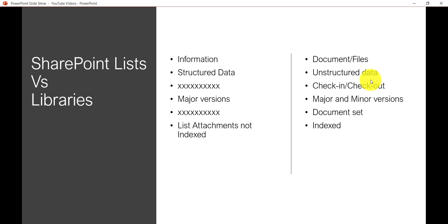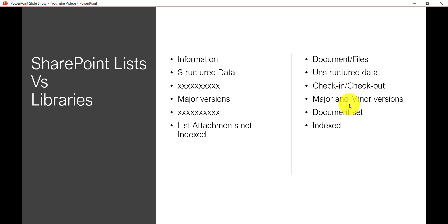In a library you have the check-in and check-out option. Check-out means if you want to modify a document you can check it out so others know you are modifying it, and once done you check it back in so the updated version is available to everyone. This feature is available in a SharePoint library but not in a SharePoint list. Another major difference is versioning: a SharePoint list supports only major versions (1, 2, 3), whereas a document library supports both major and minor versions, such as 1.1, 1.2, 1.3.